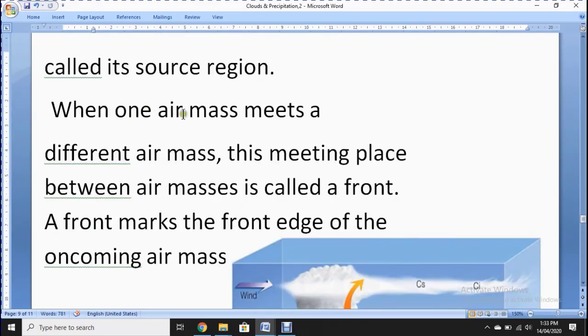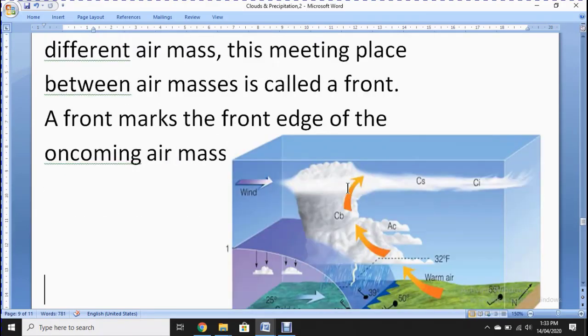When one air mass meets a different air mass, the meeting place between air masses is called a front. When two air masses combine, they make a front. A front marks the front edge of an oncoming air mass.